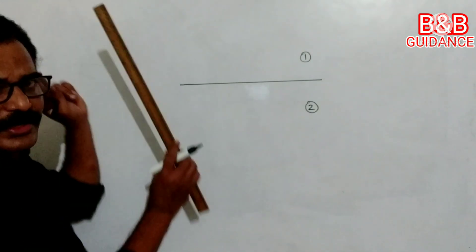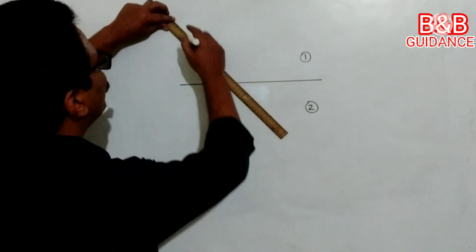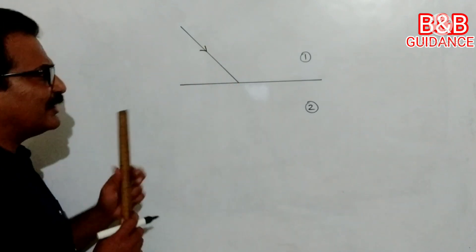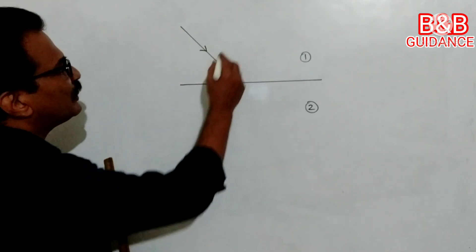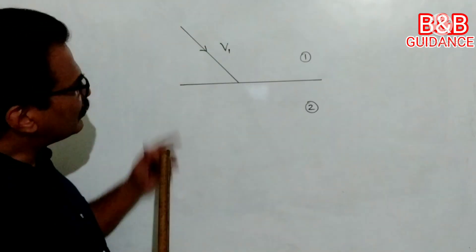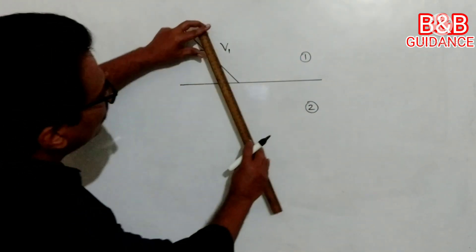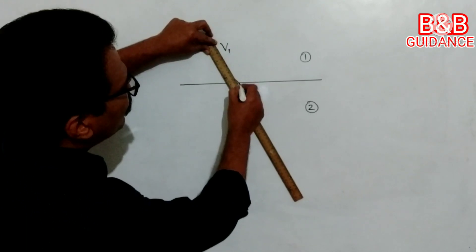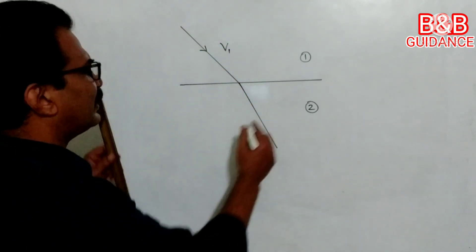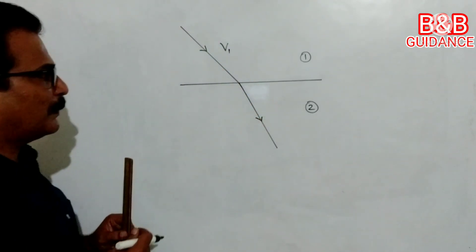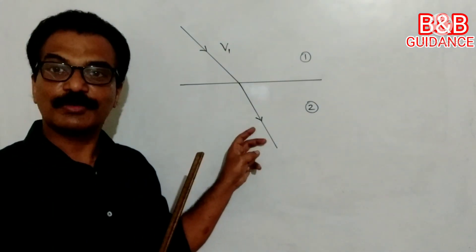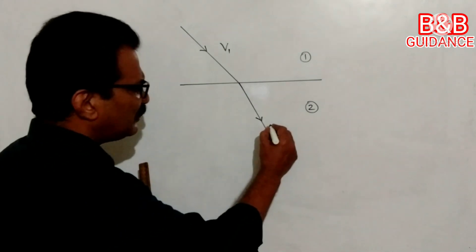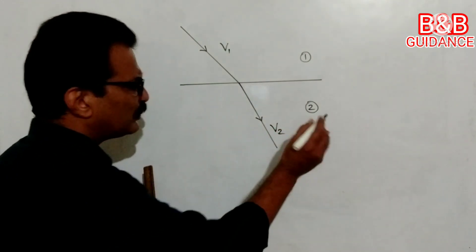Consider a ray of light which falls on the surface of separation. This incident ray travels with speed V1. When it enters the second medium, quite naturally it will bend — suppose it bends like this. Why does it bend? Because the speed of light in medium 2 is different. Let the speed be V2.